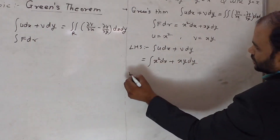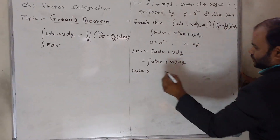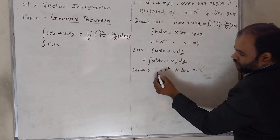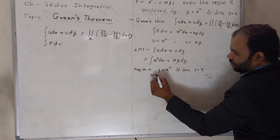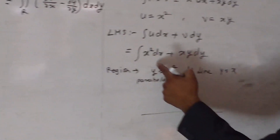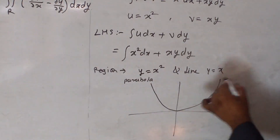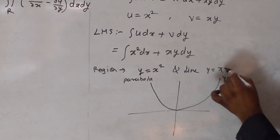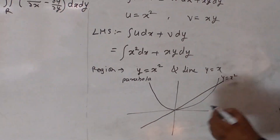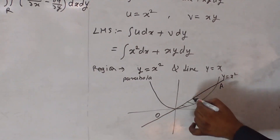Find the region first. The region is enclosed by y = x² and the line y = x. We know y = x² is the equation of a parabola. Since the degree of y is 1, this parabola is symmetric to the positive y-axis. The line y = x passes through the origin. We consider the origin as point O and the other intersection as point A, giving us the area bounded by the curve.